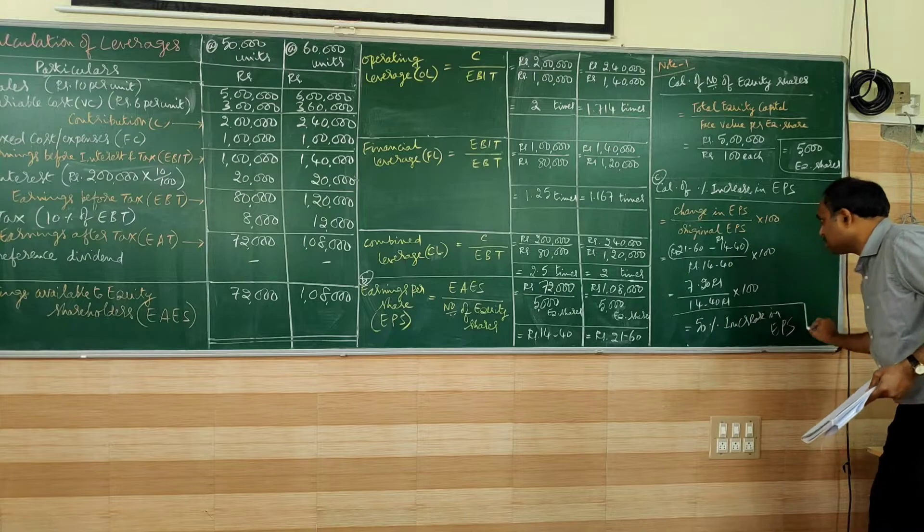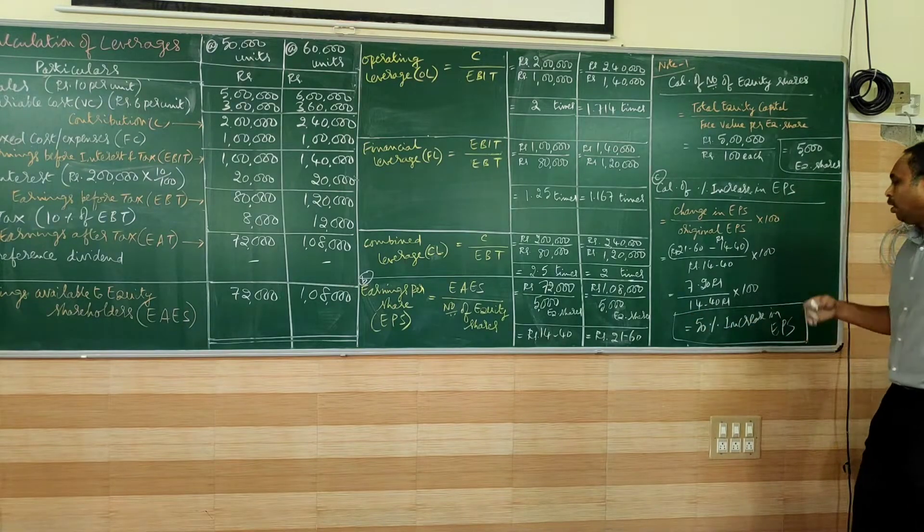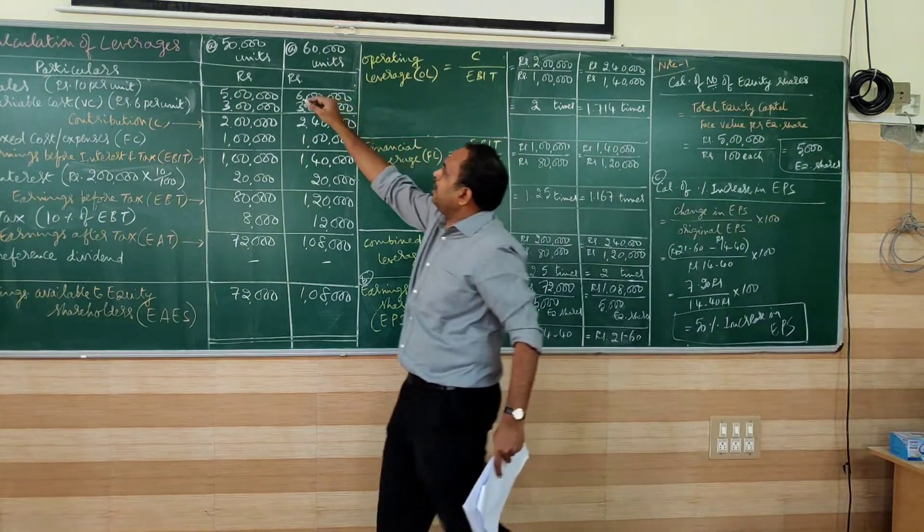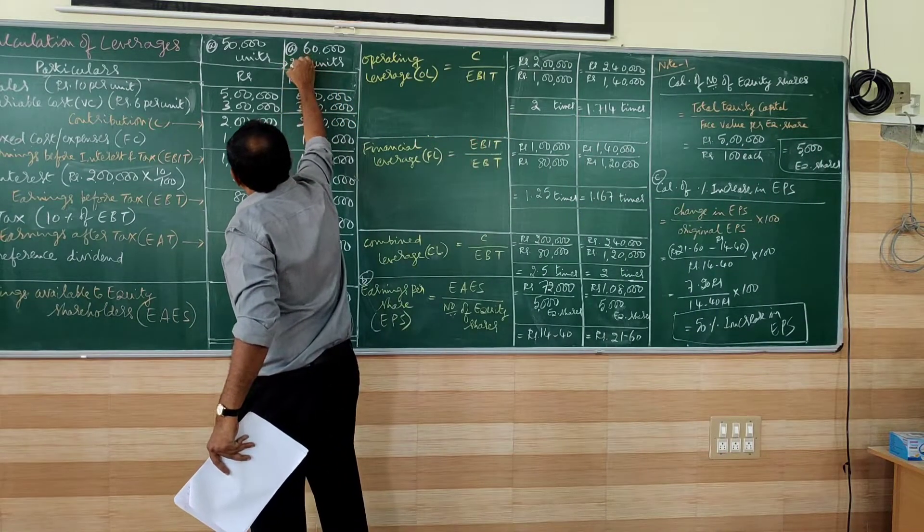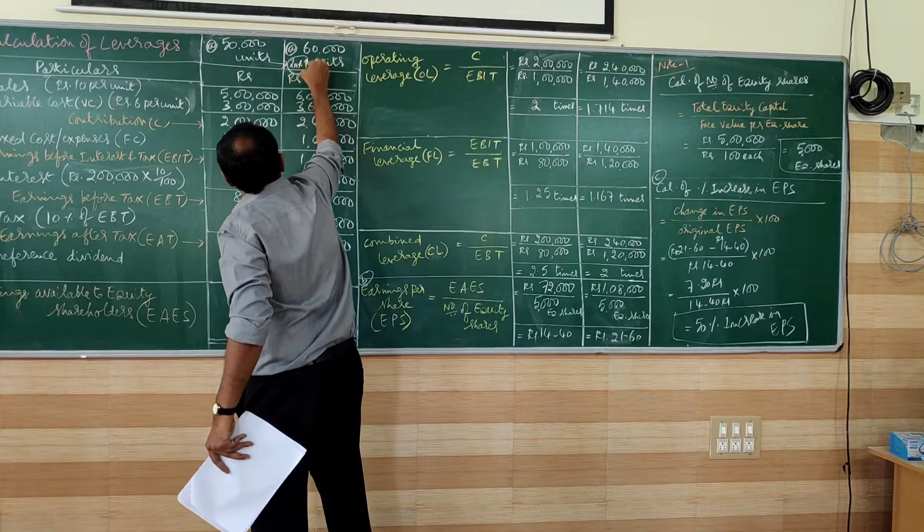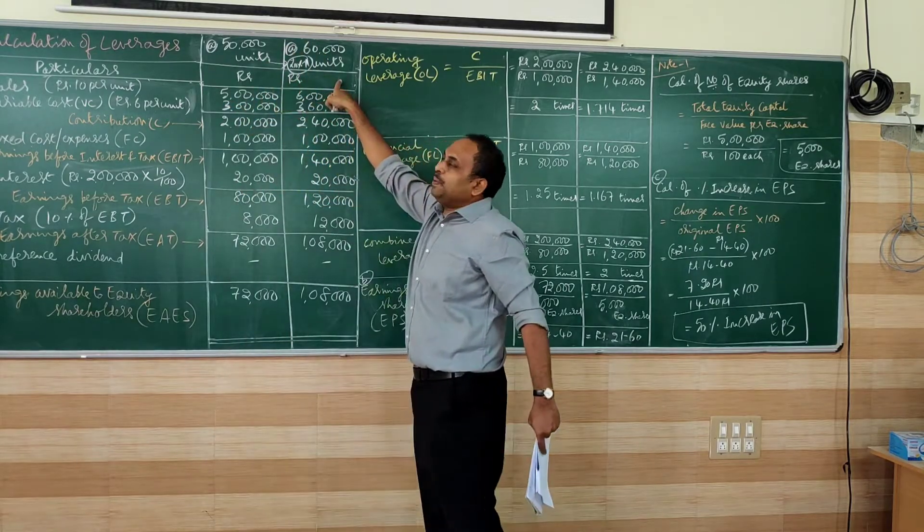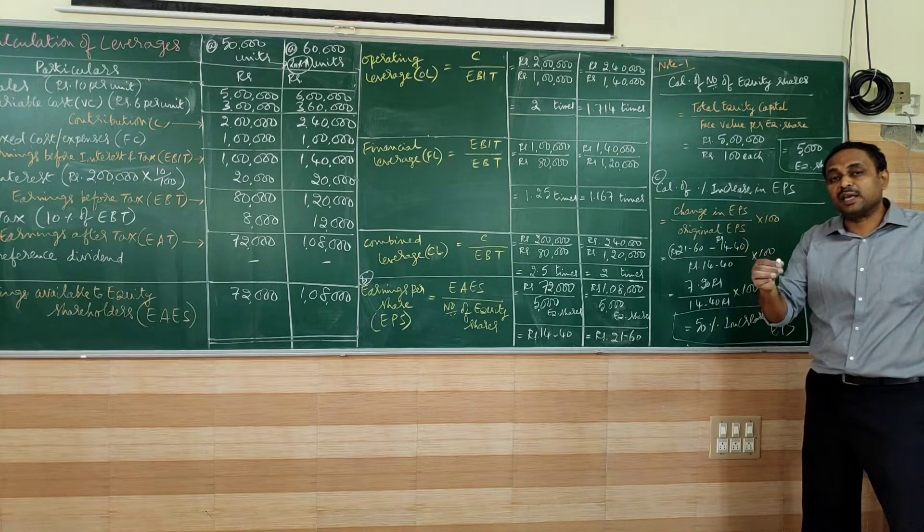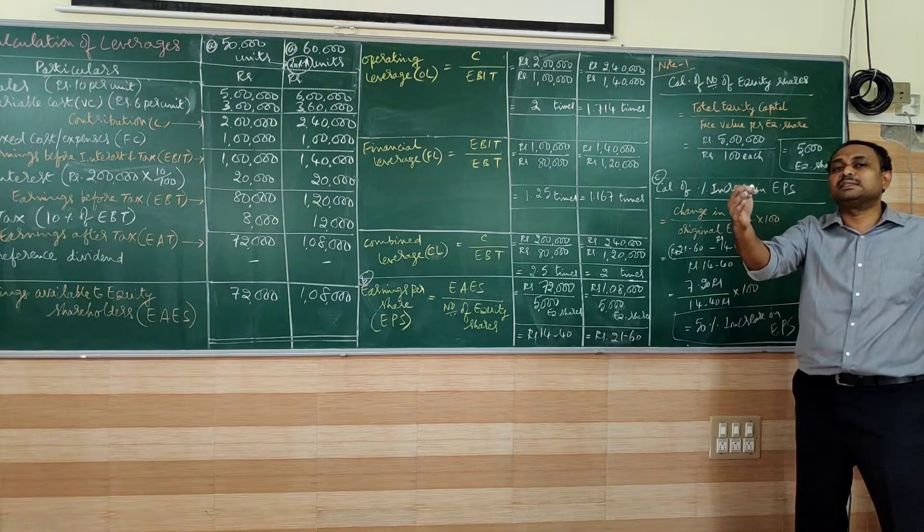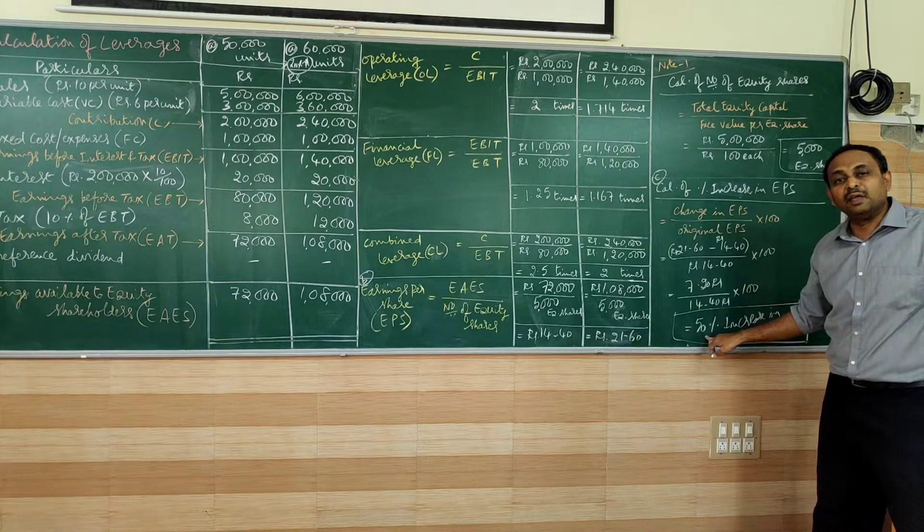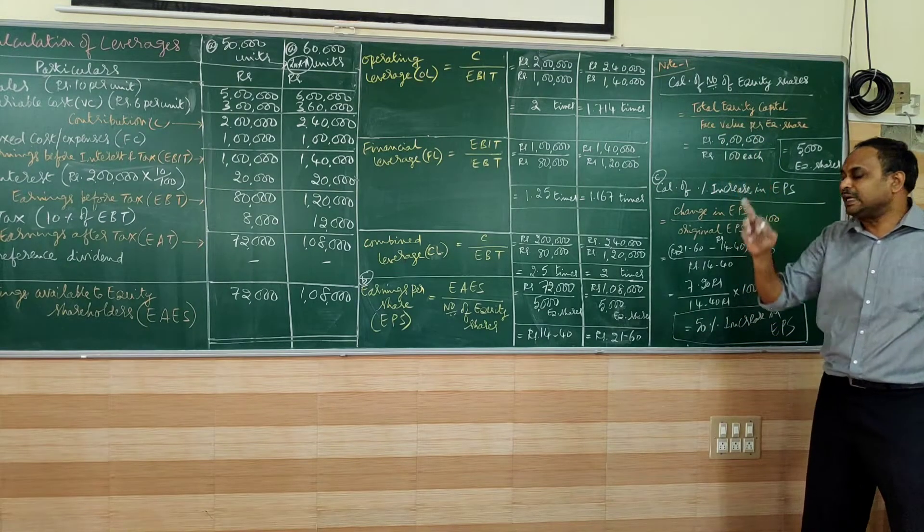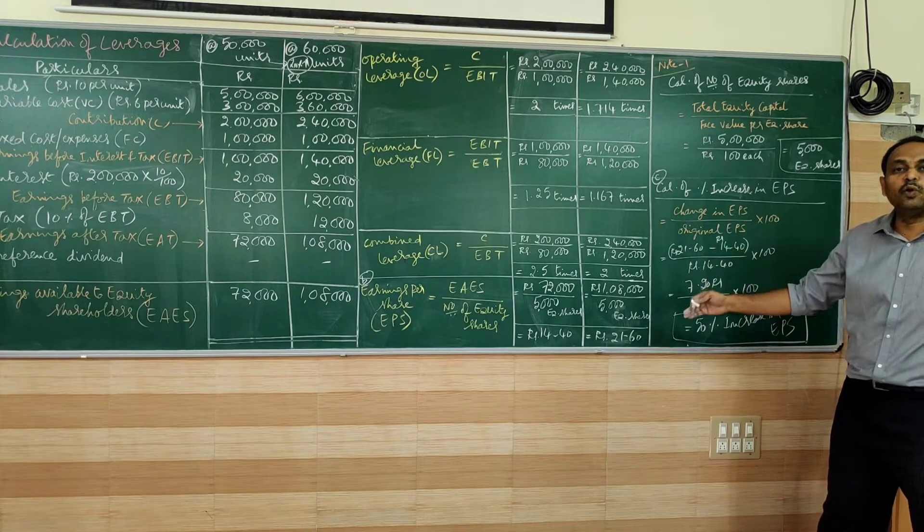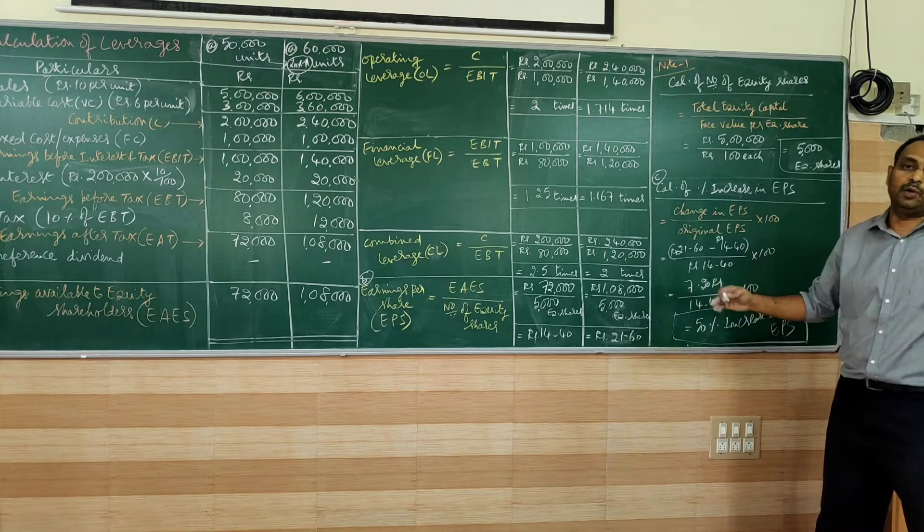From this, what do we understand? The sales has increased by 20% here, 20% increase. But EPS has increased by 50%. So we can say, 20% increase in sales is giving 50% increase in earnings per share. This is very good for equity shareholders.